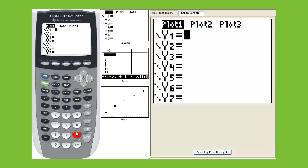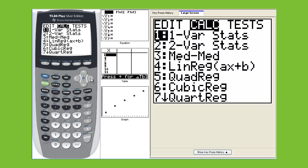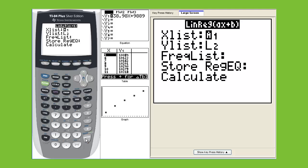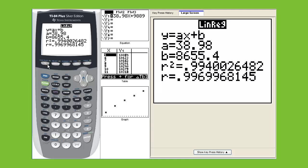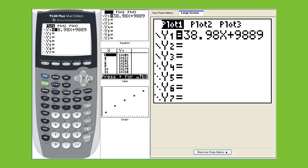You will say 38.98X plus... I forget the other number. I'm not sure, I can't remember. If you ever need to go back, go stat, calc, 4, calculate, L1 and L2. Ah, 8655.4. I was real close.